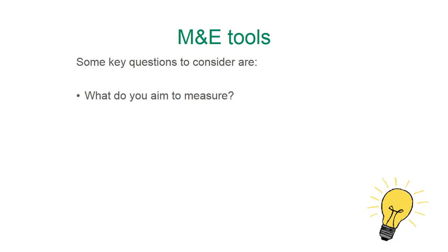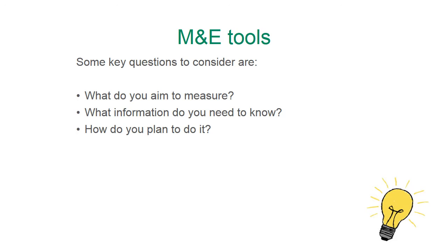If you already know that your aim for monitoring and evaluation is to measure the extent to which the objectives of your program have been fulfilled, you can start considering the second question: what information you need to know. It is important to be aware that not all information is useful or necessary. It is also crucial to decide how you plan to do it, including an assessment not only of the financial and human resources needed, but also of the resources available, to avoid future delays and reporting issues.